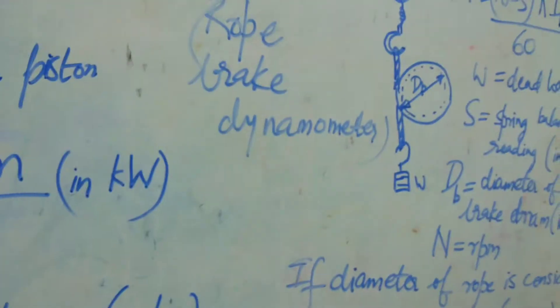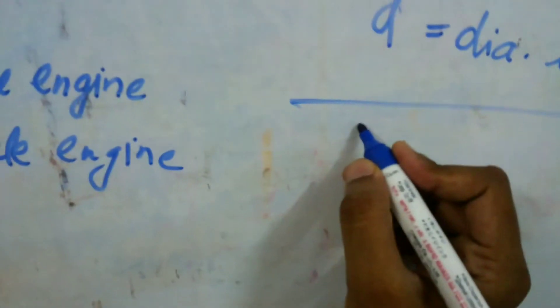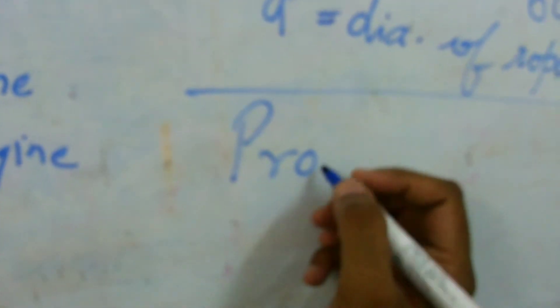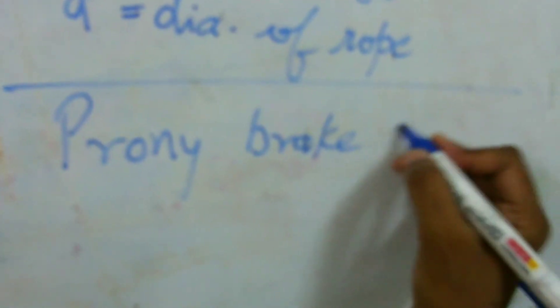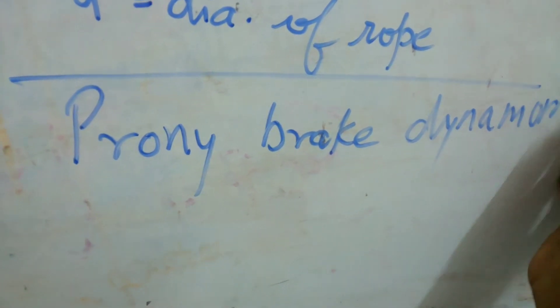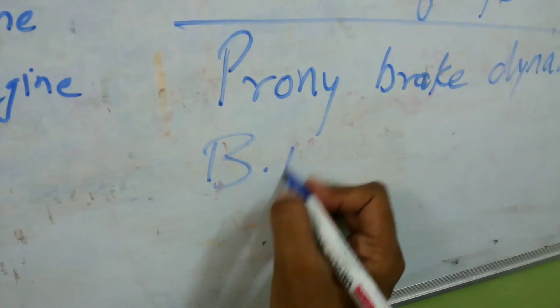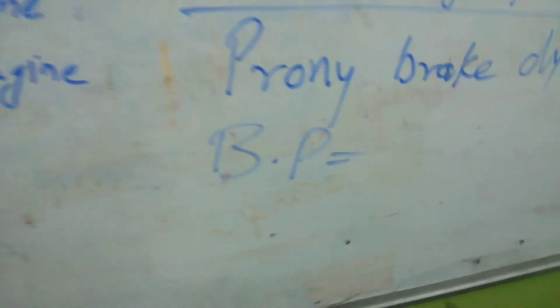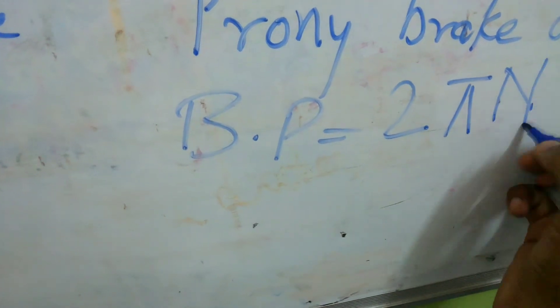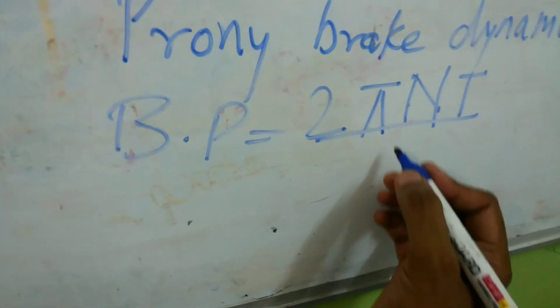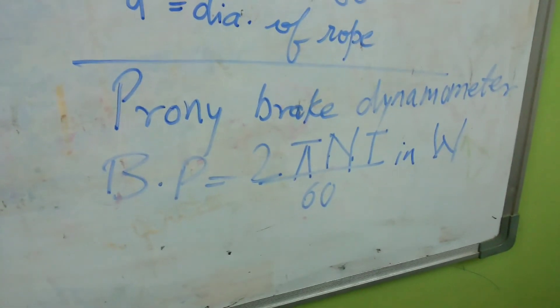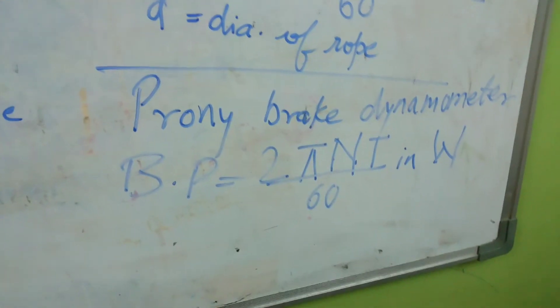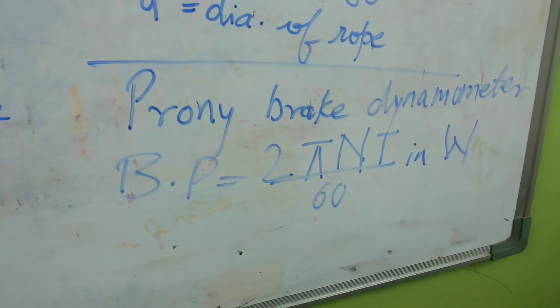Now if it is a prony brake dynamometer, the formula for brake power will be: BP = 2π × N × T divided by 60, and the unit is also watts.